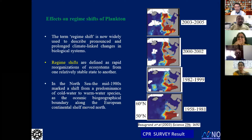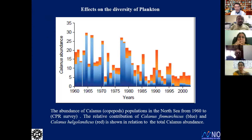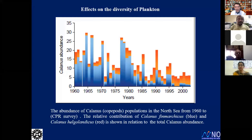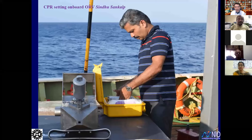Another evidence involves the abundance of two Calanus species from 1960 to 2000. Calanus finmarchicus abundance clearly decreases from 1960 to 2000, while Calanus helgolandicus proportionately increases over the same years. This kind of composition shift in plankton can be quite expected in regions experiencing climate change impacts.